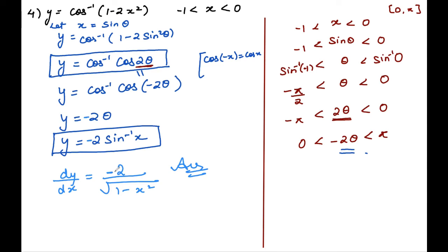To summarize: today we learned how to differentiate inverse trigonometric functions. First we saw direct differentiation; then substitution-based simplification — always simplify inverse trigonometric expressions before differentiating; and third, when intervals are given, we check if the angle is in the principal value branch and adjust accordingly using pi minus, pi plus, 2pi minus, or 2pi plus as needed.